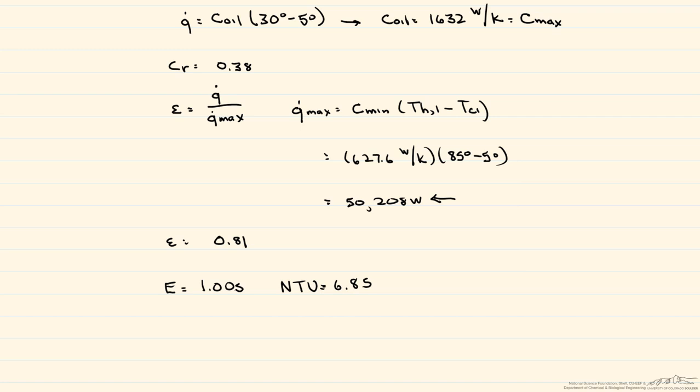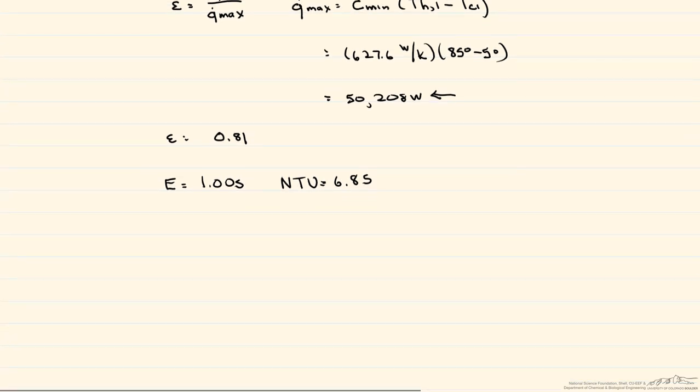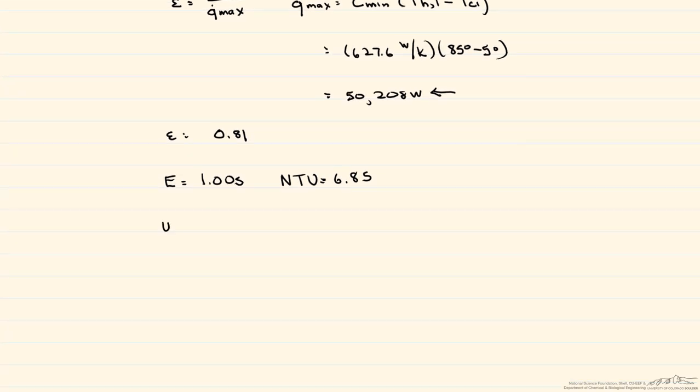And now we can go back to use that to find our UA. So our UA is equal to this NTU, 6.85 times our minimum heat capacity rate, 627.6 watts per Kelvin, and that equals 4,298.2 watts per K.